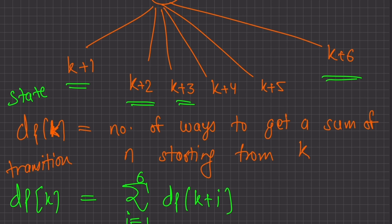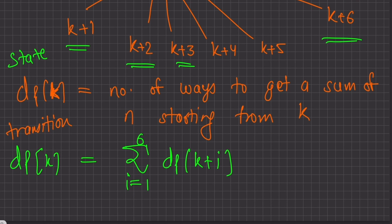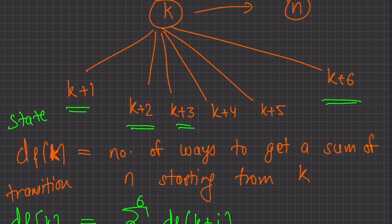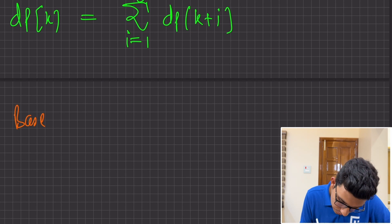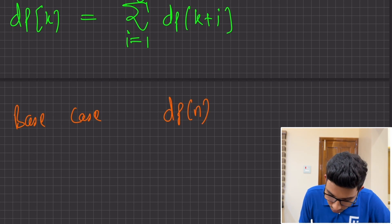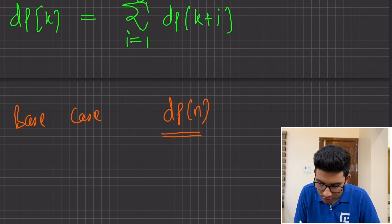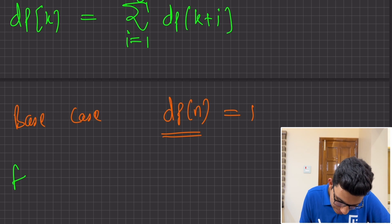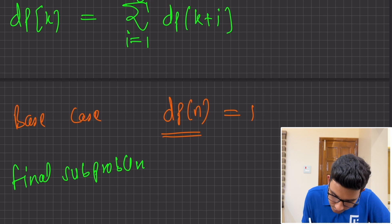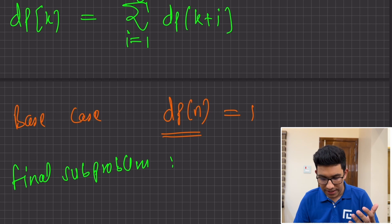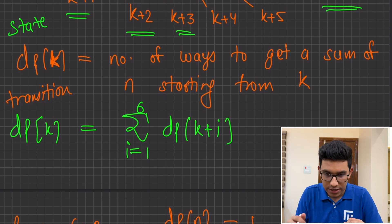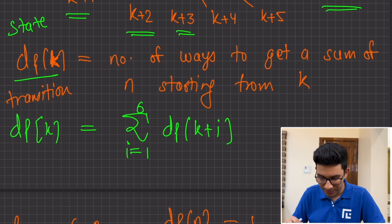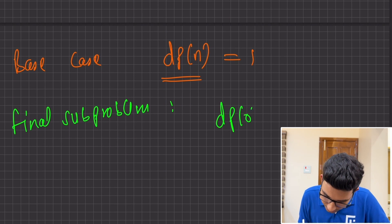Now think about the base case here. What is that smallest problem we don't want to further solve? Clearly, if you want to go from k to n and you are already at n, you don't need to further roll the dice. So the base case here would be dp of n equals 1 — the number of ways to go from n to n is just 1, you don't have to roll the dice again. And what is going to be the final sub-problem? You want to go from 0 to n, so your final sub-problem will be dp of 0.